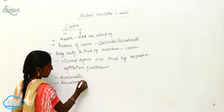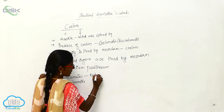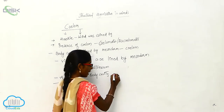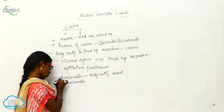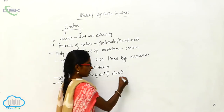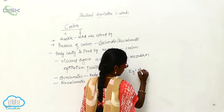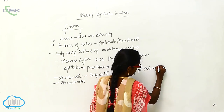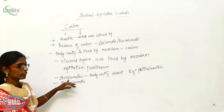Acoelomates and eucoelomates. In acoelomates, the body cavity is absent — there is an absence of coelom, so they are called acoelomates. An example of acoelomates is Platyhelminthes. Let's look at the diagram of acoelomates.